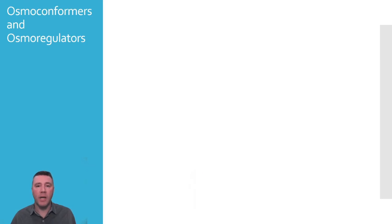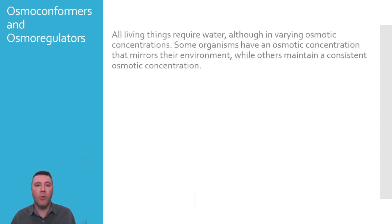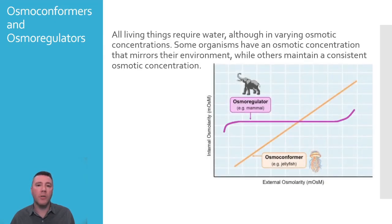Although every living thing requires water, they do not require it in the same osmotic concentrations. Organisms called osmoconformers have an osmotic concentration that mirrors their environment. These kinds of organisms essentially lack a homeostatic mechanism for osmotic concentration. An osmoregulator, on the other hand, has processes, mechanisms, and structures to maintain a consistent water balance.